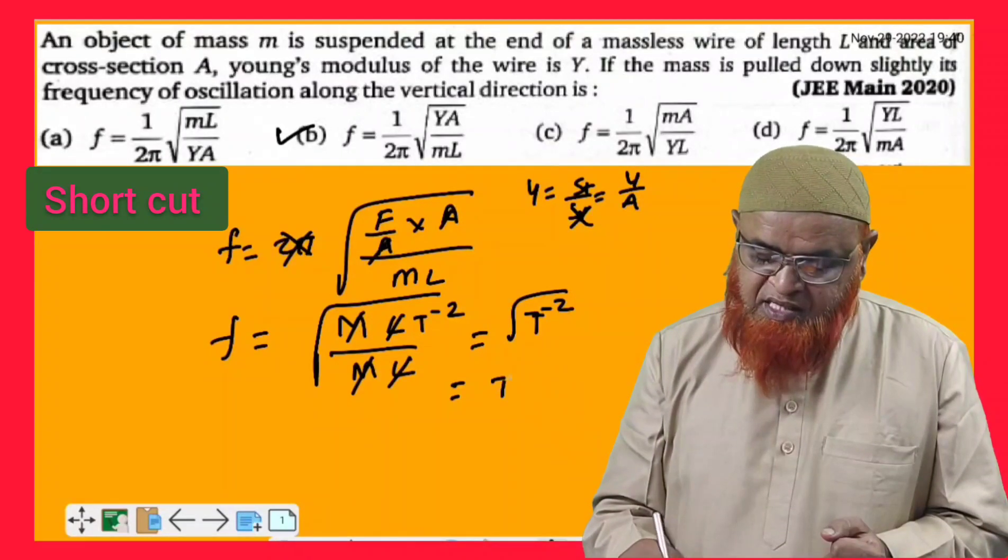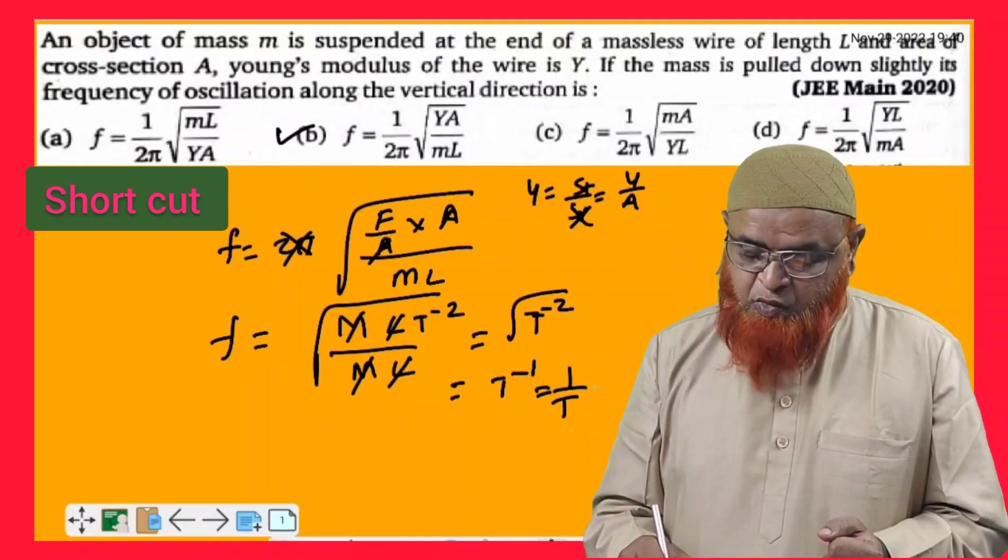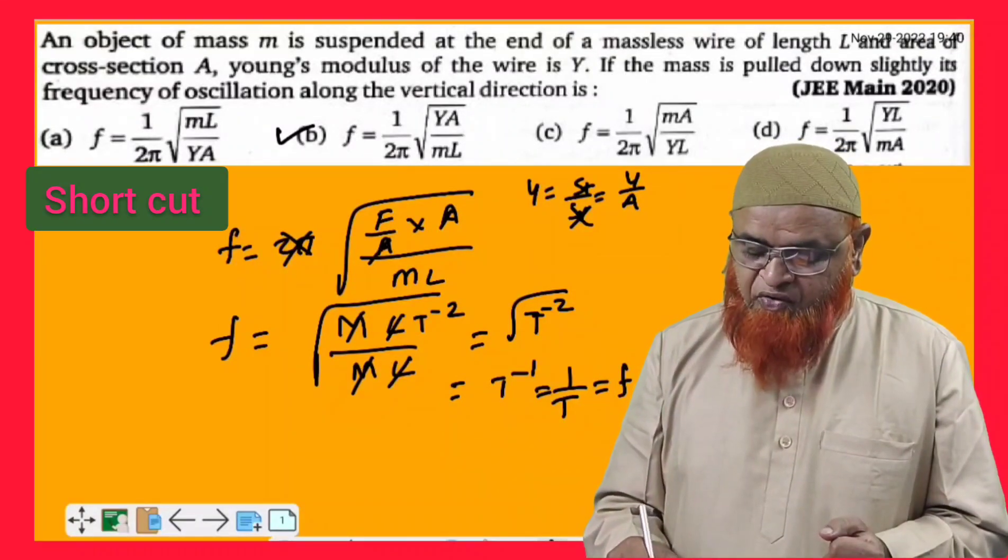Only t^-2 under root is left, which is nothing but t^-1. And t^-1 which is nothing but 1 by t, which is equal to frequency.